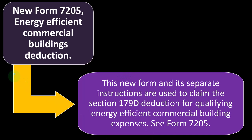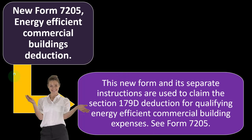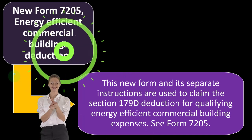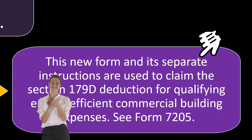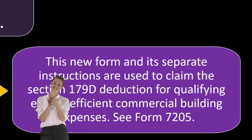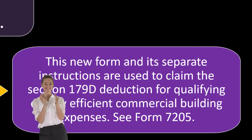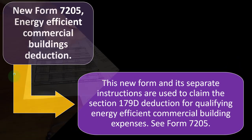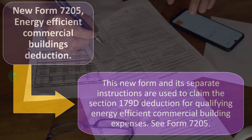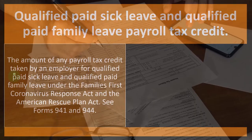New Form 7205: Energy Efficient Commercial Building Deduction. This new form and its separate instructions are used to claim the Section 179D deduction for qualifying energy efficient commercial building expenses. If that's applicable, you can take a look at Form 7205 for more information on it.